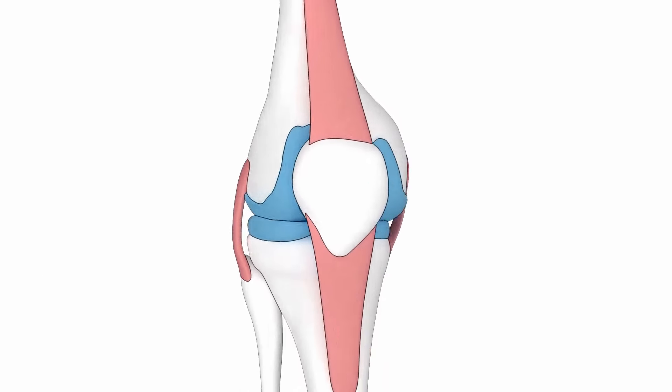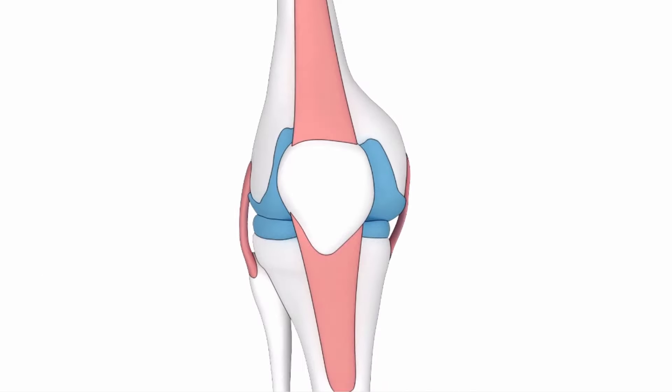Today we are diving into patellofemoral pain or runner's knee, which is diagnosed with certain characteristics — that being pain around the border or underneath the patella, your kneecap, and it's very hard to pinpoint where the location is. Often runners will wipe their fingers around a certain border of the knee and say it's kind of around here. The fact that it's so ill-defined and they can't point with one finger sort of hones in on the accuracy that it might be runner's knee.